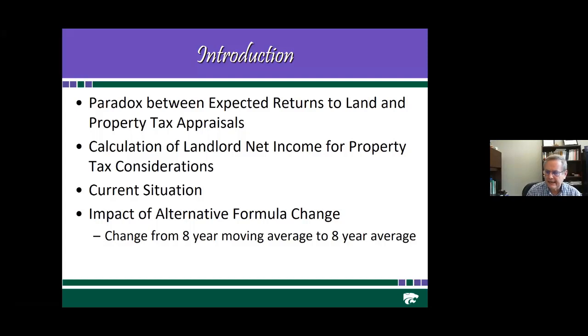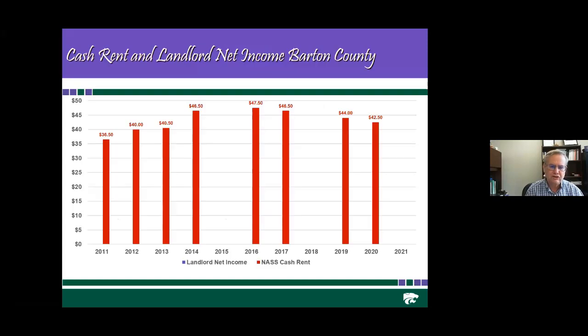In the last legislative period, there was a proposal to look at a formula change — moving from an eight-year moving average to just an eight-year simple average. We'll spend some time looking at what that would mean for the landlord net income. That legislation, as of my last knowledge, did not go forward this year, but it's important to have some thought about what may change.